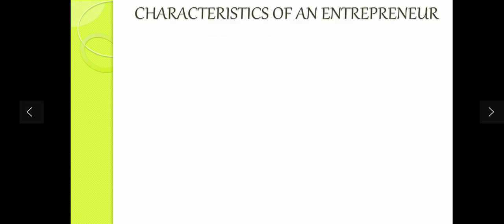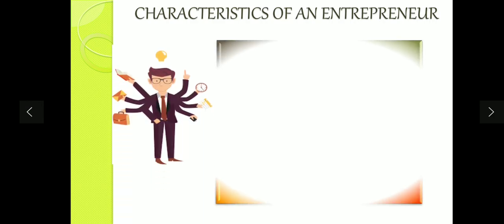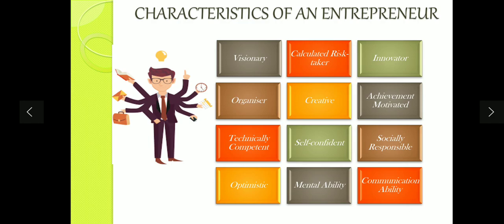Now, what are the characteristics of an entrepreneur? These are certain qualities I have mentioned. Number one: visionary — this person has a long-term vision. Second: calculated risk taker — they take risks after calculating. Third: innovators — they have brilliant ideas. Fourth: organizers — they plan and organize everything. Fifth: creative people — they do things differently. Sixth: achievement motivated — they have a goal in mind. Seventh: technically competent — they have skills. Eighth: self-confident and optimistic. They are also socially responsible, have mental abilities, and communication ability.